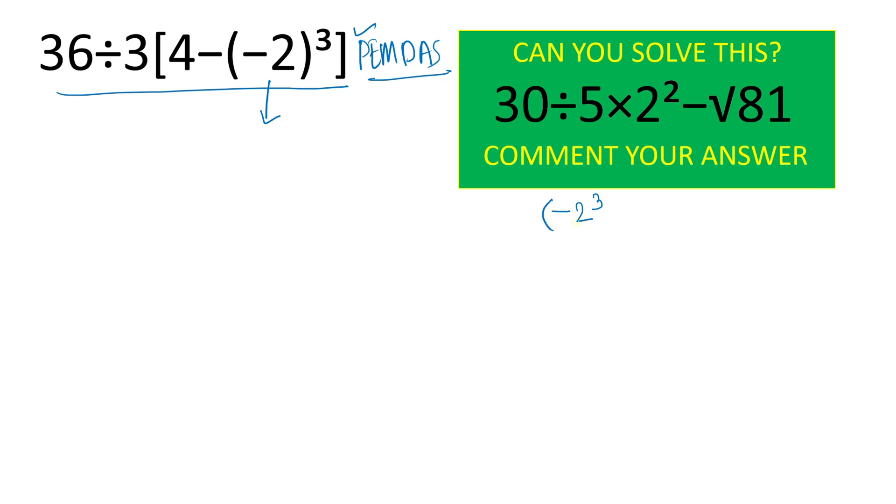So here is in parenthesis. So we will simply write minus 2 times minus 2 times minus 2. And 2 times 2 that is 4, 4 times 2 that is 8. And here minus will continue. So we will write here 36 divided by 3 multiplied by 4 minus and here value minus 8.